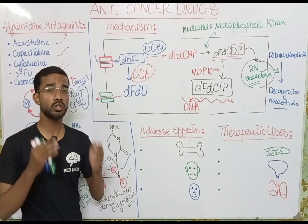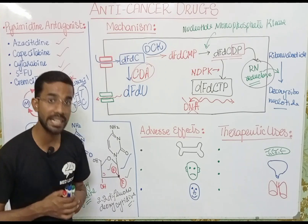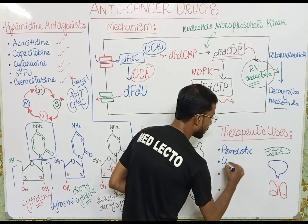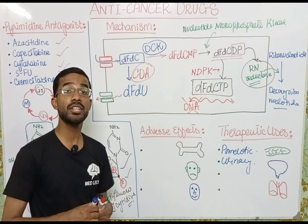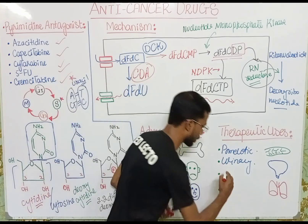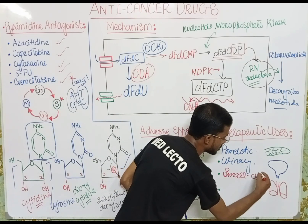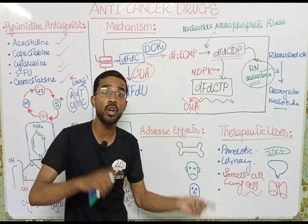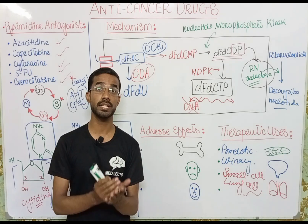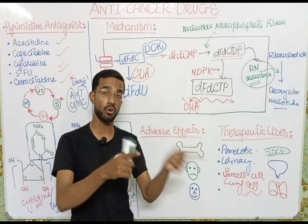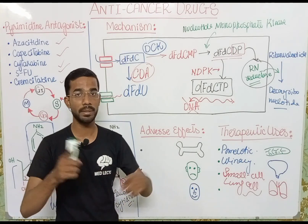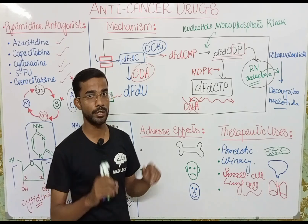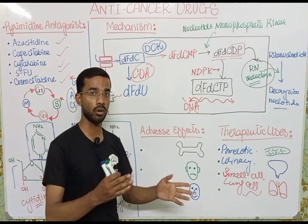Now talking about the therapeutic uses — gemcitabine is most importantly used in pancreatic cancers, urinary bladder cancers, and small cell lung cancer, which is very important. Small cell lung cancer is rapidly growing compared to non-small cell lung cancer, and the main cause is smoking. Gemcitabine is used for this case and can also be used in non-Hodgkin lymphoma, which is a very complicated topic discussed in different lectures.